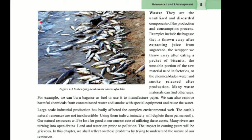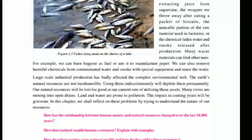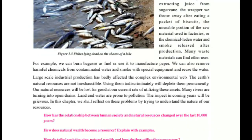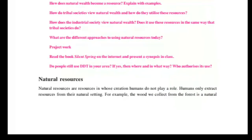Large-scale industrial production has badly affected the complex environmental web. Earth's natural resources are not inexhaustible — using them indiscriminately will deplete them permanently. Our natural resources will be lost at our current rate of utilization. Many rivers are turning into open drains; land and water are prone to pollution. The impact in the coming years will be grievous. In this chapter, we will reflect on these problems by trying to understand the nature of our resources.